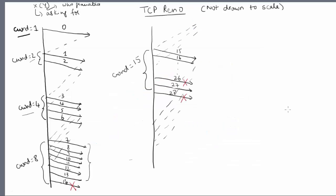Here is the example for TCP Reno. We use the same setup as before: packets 14, 26, and 28 were lost. Until this point there is no difference between TCP Tahoe and Reno. Here are the duplicate ACKs asking for 14 — generated as a consequence of 15, 16, and 17. These are the three duplicate ACKs, so you retransmit packet 14. This is fast retransmit.